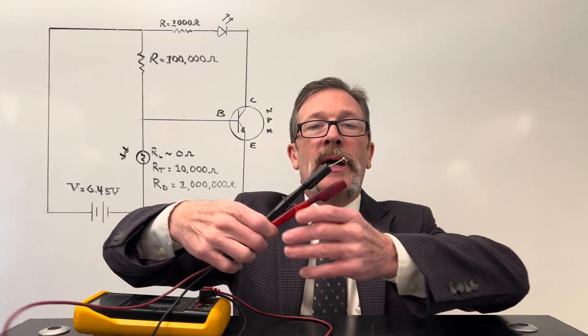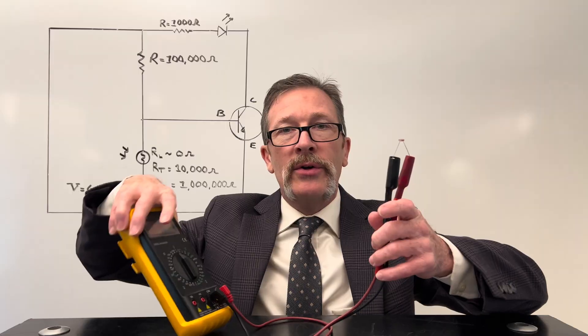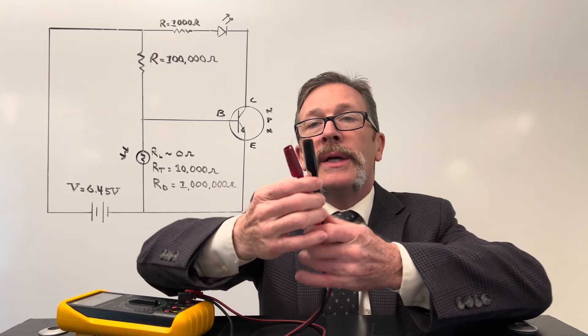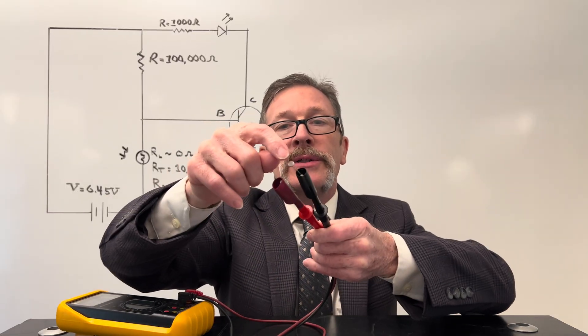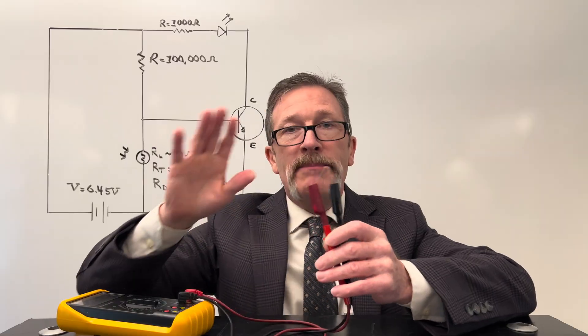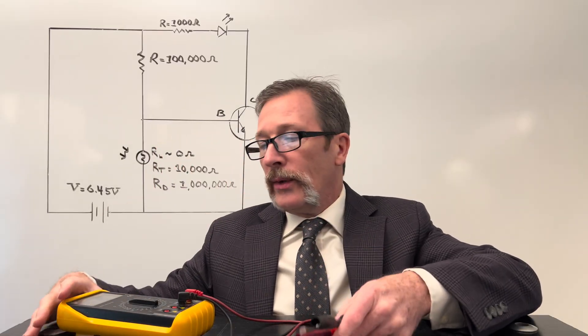For today's quiz we're going to be talking about a photoresistor. I have it hooked to a multimeter. It is this little cadmium sulfide device. It's a passive device and yet it has remarkable range.